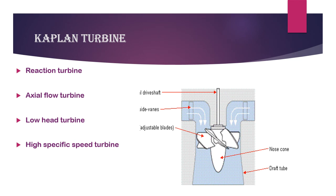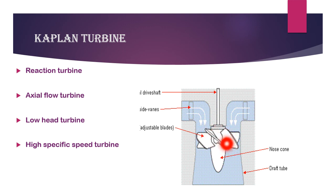The Kaplan turbine is also a reaction turbine, but the flow is axial — it is an axial flow turbine. It is used where net head is low and specific speed is higher. If the blades are fixed, it is called a propeller turbine; if adjustable, it is a Kaplan turbine.